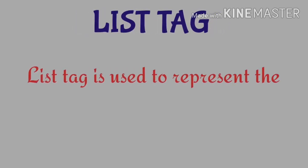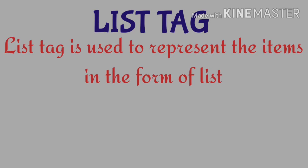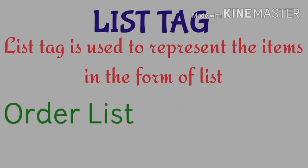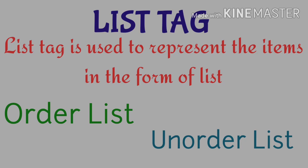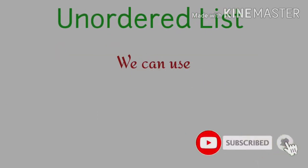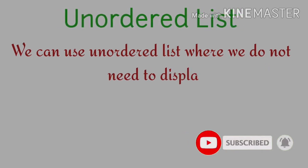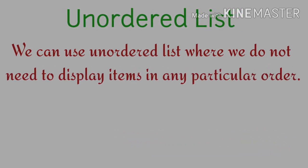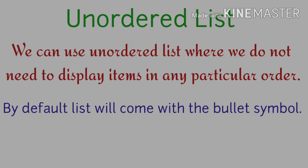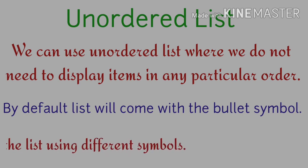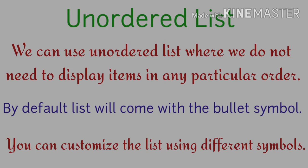List tag is used to represent items in the form of a list. There are two types of list tag: ordered list and unordered list. Today we are going to learn about unordered list. We can use unordered list where we do not need to display items in any particular order. By default, the list will come with the bullet symbol, but you can customize the list using different symbols.